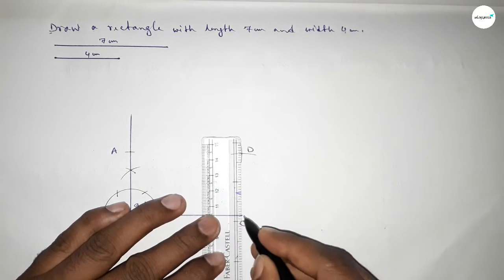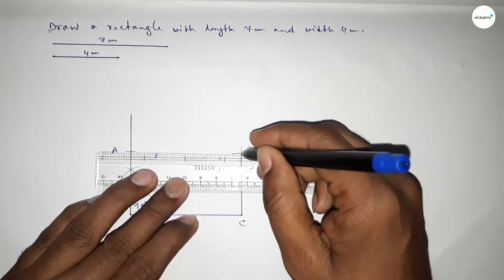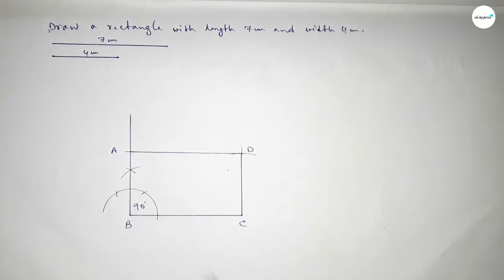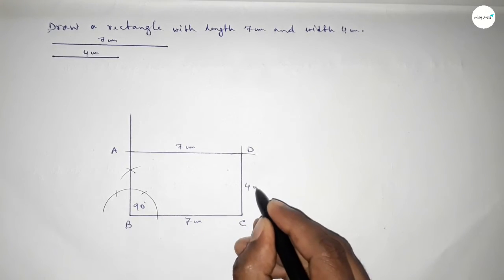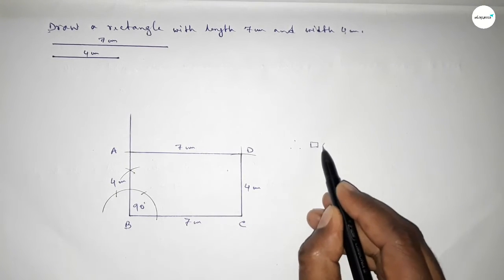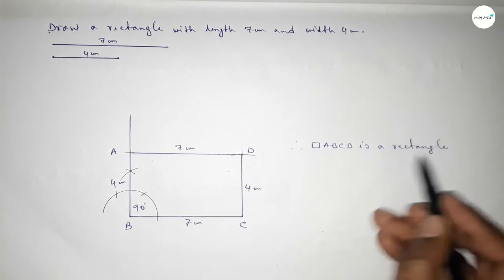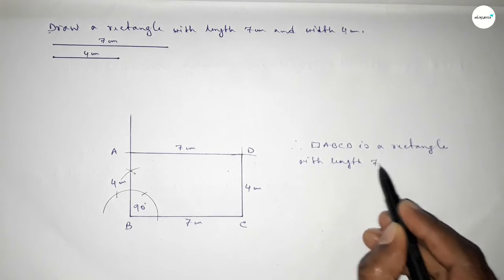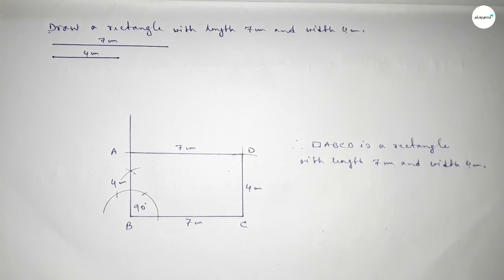Now first joining line CD, next joining line AD. This is 7 centimeter, this is 7 centimeter, and this one 4 centimeter and this one 4 centimeter. Therefore rectangle ABCD is a rectangle with length 7 centimeter and breadth or width 4 centimeter. That's all. Thanks for watching. If this video is helpful to you then please share it with your friends and please like the video.